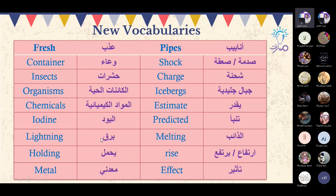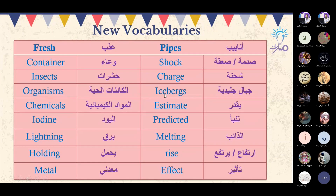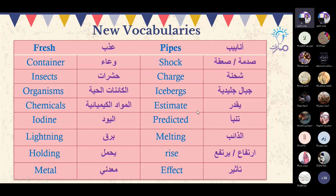Lightning — البرق. Holding — يحمل. Metal — معدني. Pipes — أنابيب. Shock — صدمة أو صاعقة. Charge — شحنة. Icebergs — جبال جليدية أو قمم جليدية. Estimate — يقدر، يخمن.